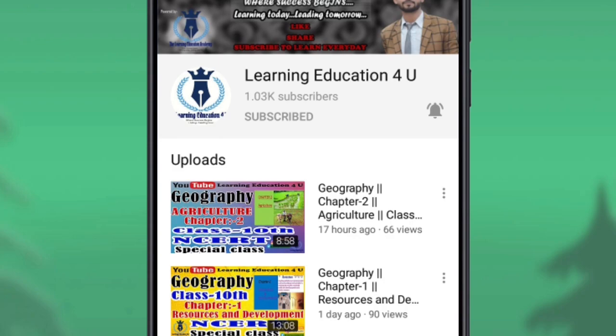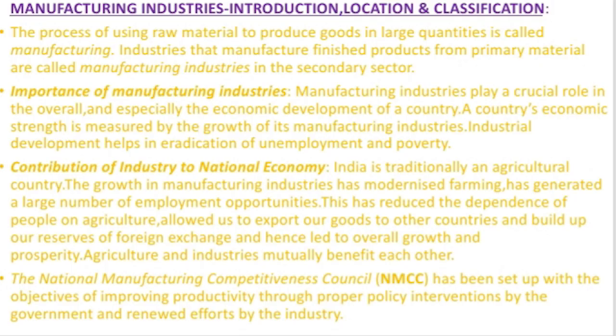Our first topic in this chapter is Manufacturing Industries: Introduction, Location, and Classification. The process of making raw materials into valuable goods in large quantities is called manufacturing industries, which produce finished products. These industries are part of the secondary sector.